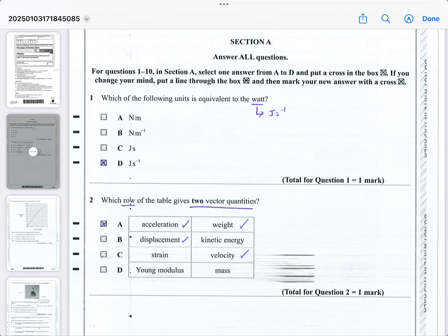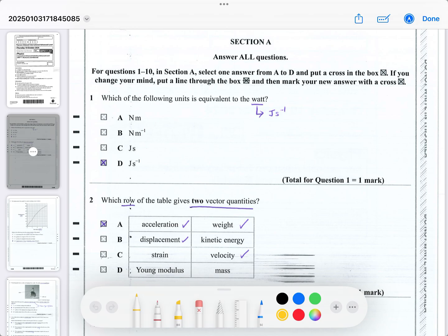So the first question, very simple, is about units. Which of the following units is equivalent to the Watt? Well, a Watt is joules per second, so you can immediately save time in this exam by going straight to the answer. If you're confident, you can see that there is the only one which would be equivalent to a Watt.